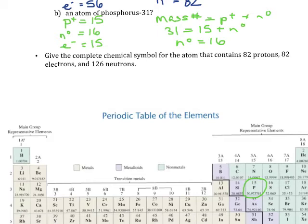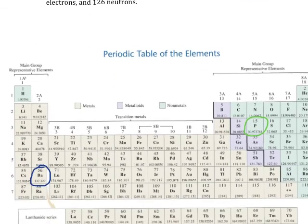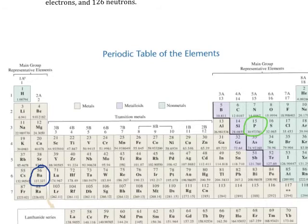For the last problem, we're actually going to build our own symbol — we're working backwards. They're telling us the protons, electrons, and neutrons, and we're going to determine what symbol that represents. Taking a look at the number of protons — 82 — that tells us the atomic number. If we look at the periodic table, the element with atomic number 82 is lead. Remember the periodic table is arranged by increasing atomic number, so atomic number 82 is lead.